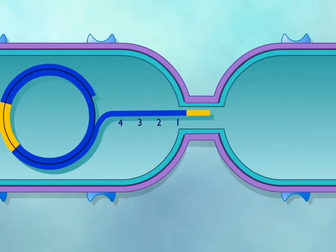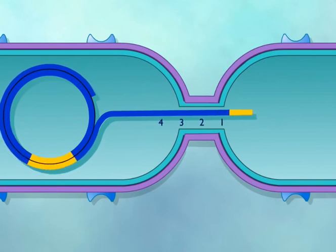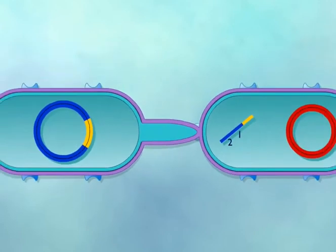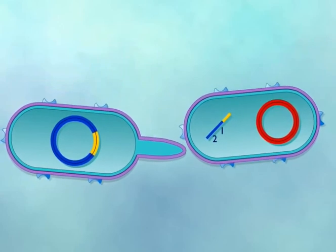It is theoretically possible for the complete genome and the F-plasmid to be transferred to the recipient cell. However, this does not happen because the donor and recipient cells will separate prior to the complete transfer of the donor chromosome.